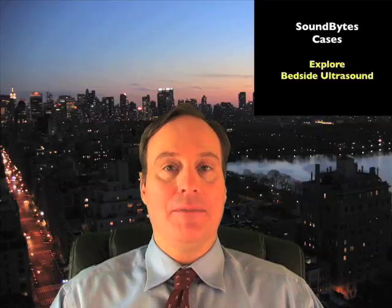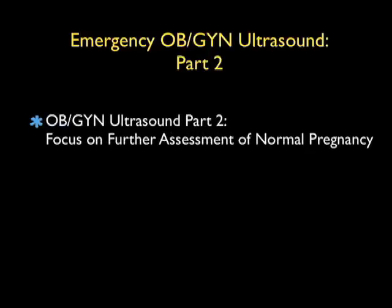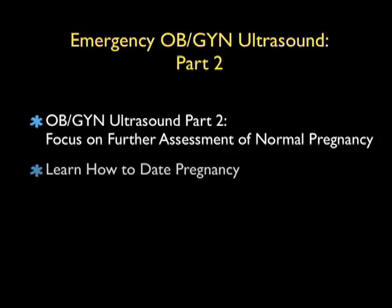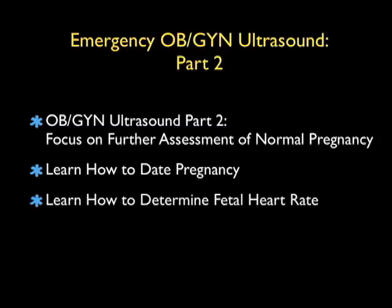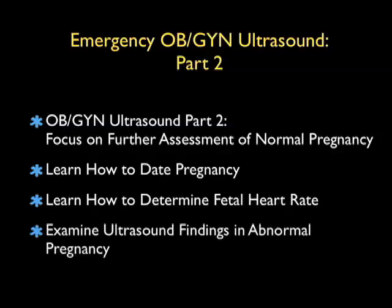Hello, my name is Phil Pereira, and I'm the Emergency Ultrasound Coordinator at New York Presbyterian Hospital in New York City. Welcome to SoundBytes Cases. In this module entitled Emergency OBGYN Ultrasound Part 2 of Intrauterine Pregnancy, we're going to focus on the further assessment of normal pregnancy. We'll look at two further things: learning how to date the gestational age of the pregnancy, as well as learning how to determine the fetal heart rate. Then we'll wrap up the module by examining further findings in abnormal pregnancies and learning how to differentiate these findings from a normal intrauterine pregnancy.